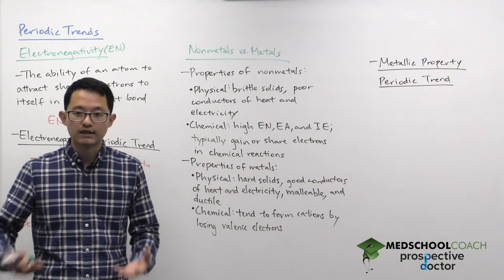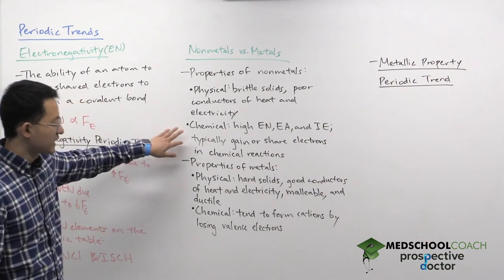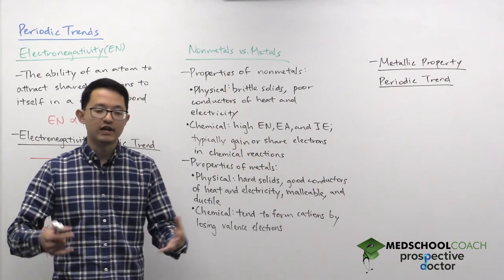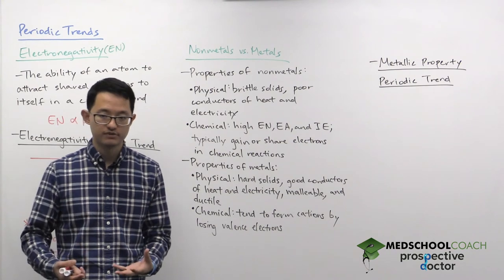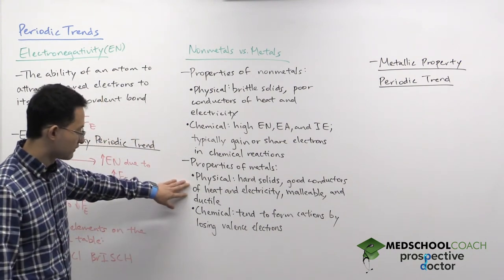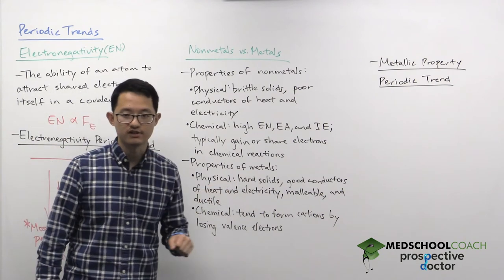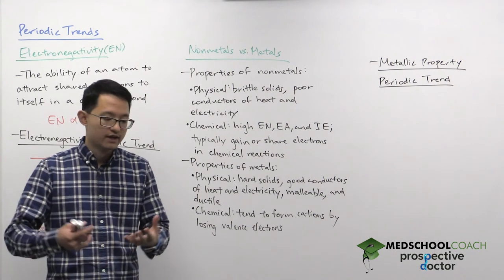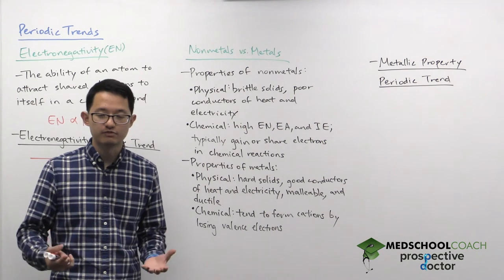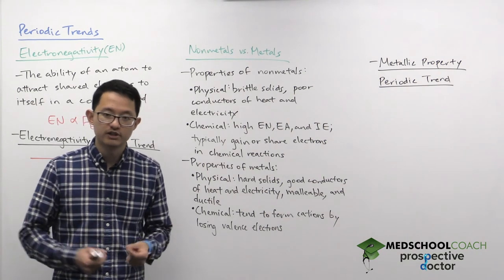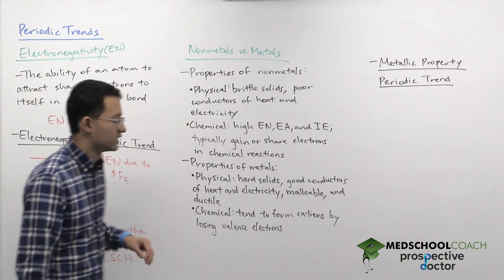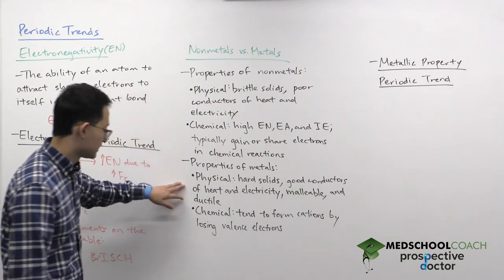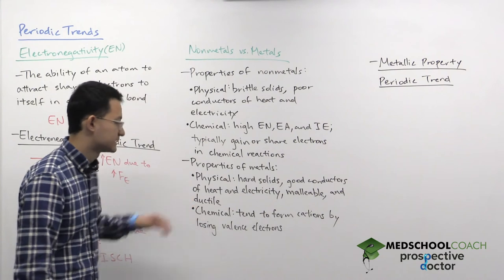In general, nonmetals are atoms that really like electrons, so in chemical reactions they tend to gain or share electrons. For metals, they have several physical properties. They are hard solids — a lot of equipment like laptops are made of metals because metals are very strong, sturdy materials. They are good conductors of heat and electricity, which is why all of our electrical wires are made of metals.